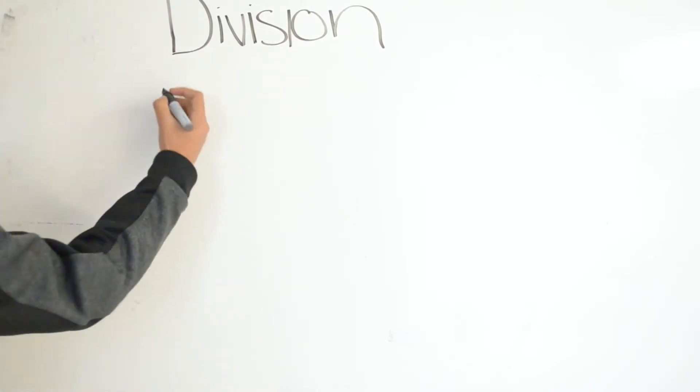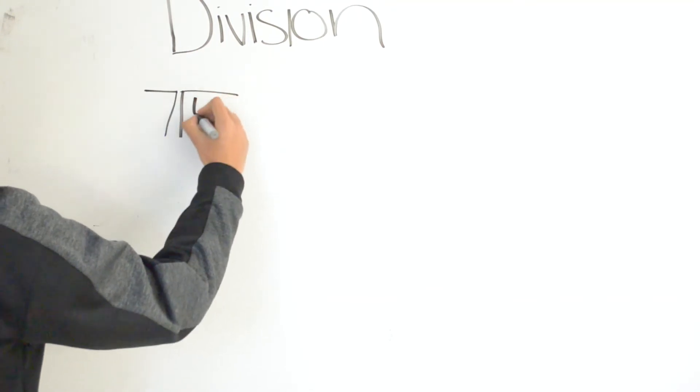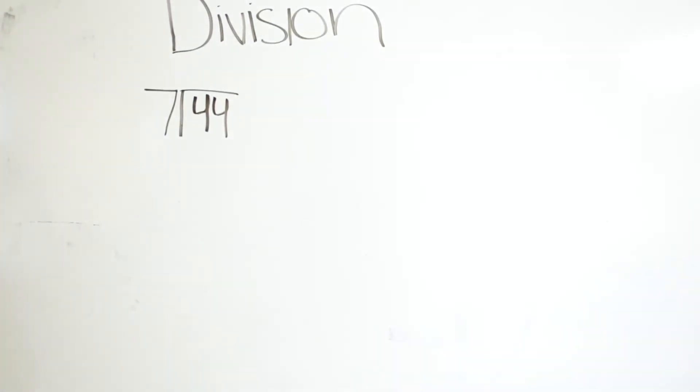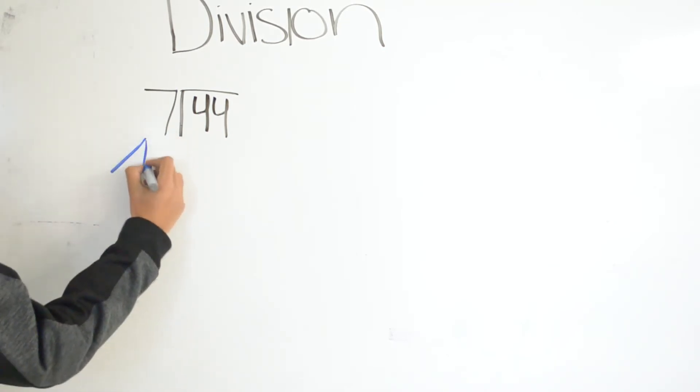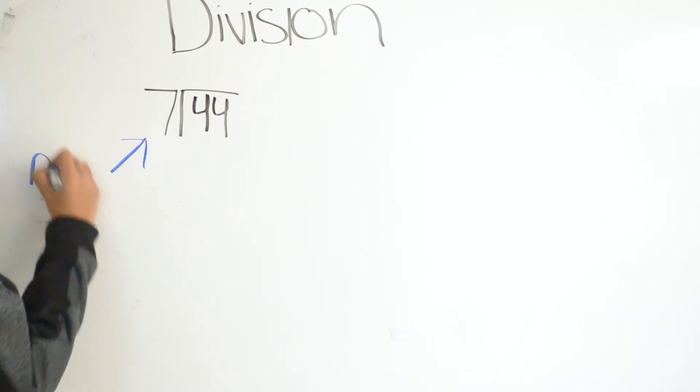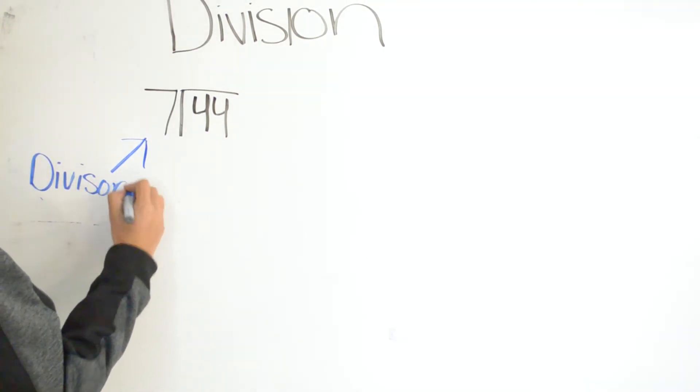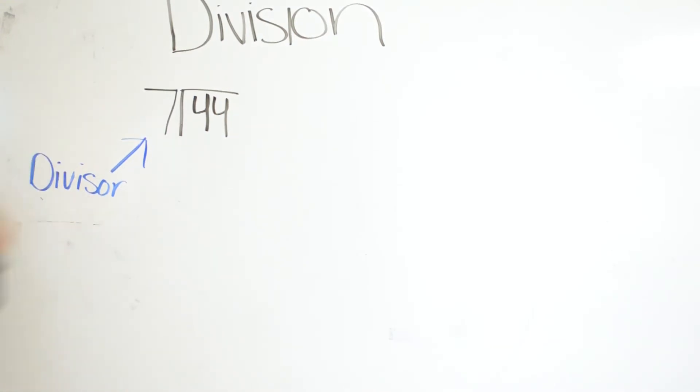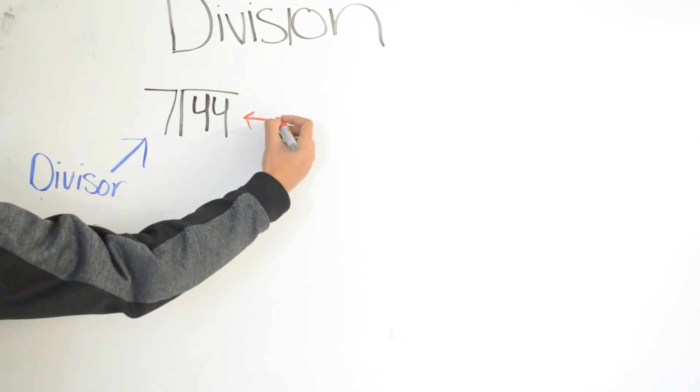Our third example we have 7 divided by 44. Our divisor is 7 and our dividend is 44.